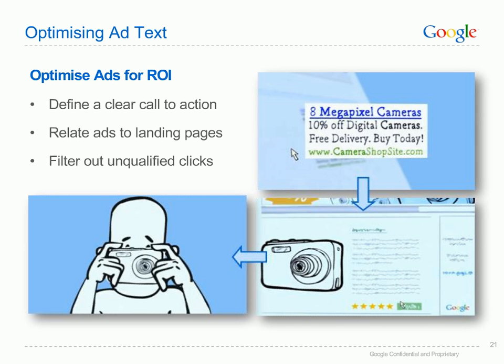Filter out unqualified clicks. If you want to separate potential customers from those who aren't ready to buy, use descriptive phrases targeting your ad text. For example, filter out users who only buy via phone by including something like 'purchase online'. Words like buy, purchase and order can also help ensure that ad clicks come from qualified customers.